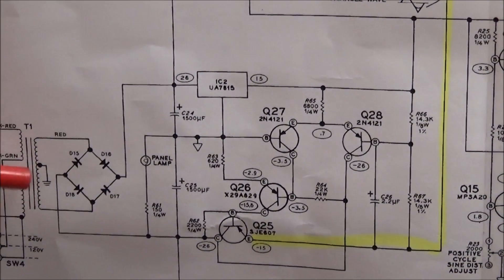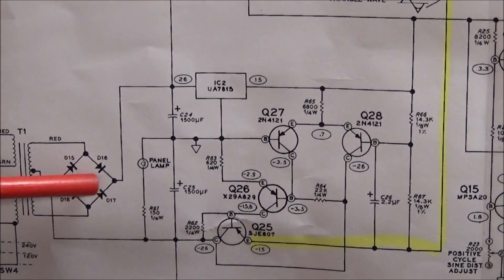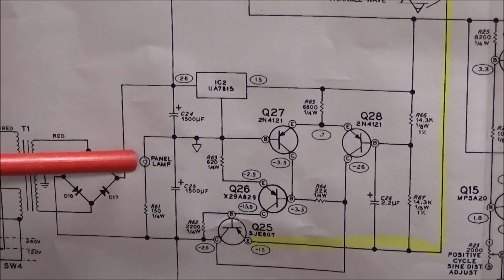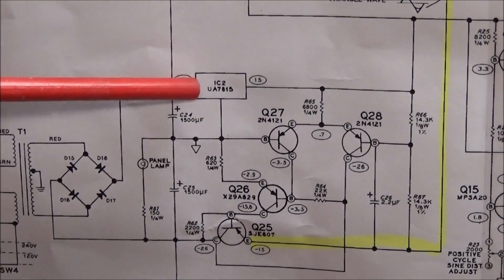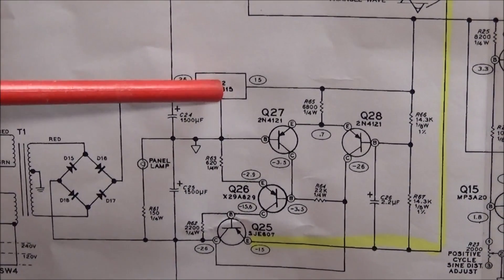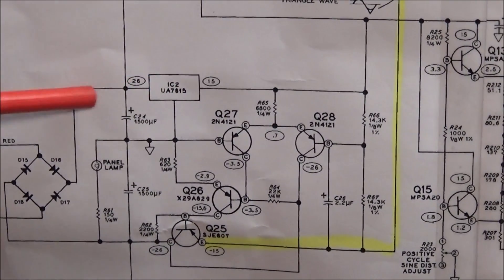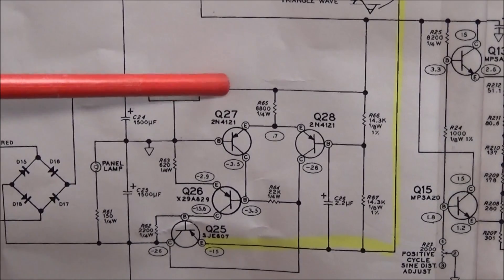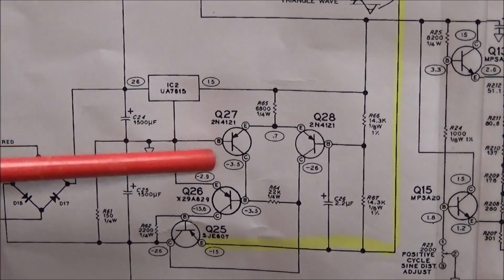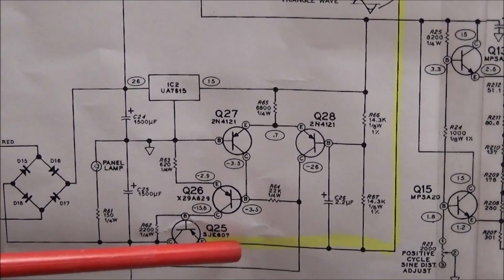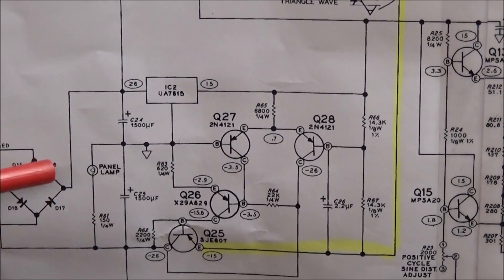Your mains come in through the transformer into the bridge rectifier. Off the bridge rectifier comes about 26 volts and goes into a 7815 voltage regulator. What's interesting about this circuit is that it outputs 15 volts positive. The circuit also mirrors below ground 15 volts negative.